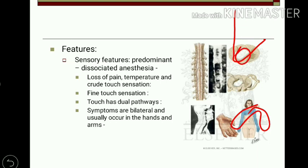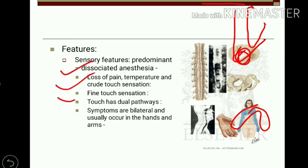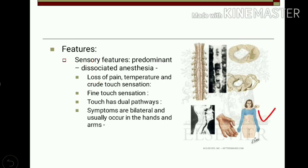Fine touch fibers are not lost because they are carried by the dorsal column tract, which ascends on the same side and reaches the fasciculus gracilis and cuneatus in the medulla oblongata, where second-order neurons cross. So if a cavity is formed centrally, fine touch fibers escape damage. Therefore, the person has loss of pain, temperature, and crude touch, but fine touch sensations are intact. Symptoms are bilateral and usually occur in the hands and arms.